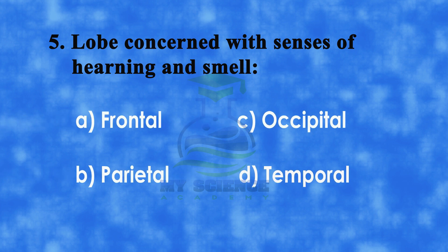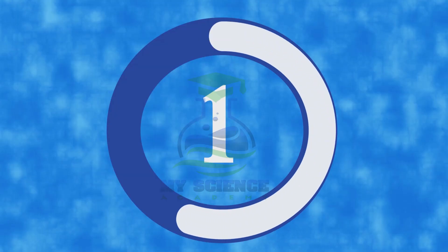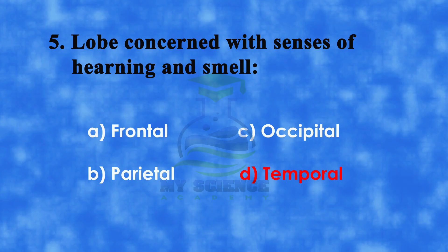Number 5: Lobe concerned with senses of hearing and smell. A: frontal, B: parietal, C: occipital, or D: temporal. And correct answer is D: temporal.